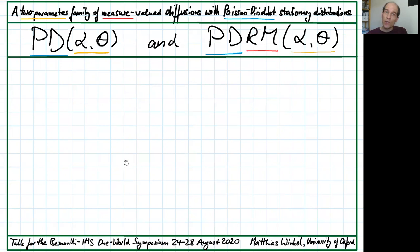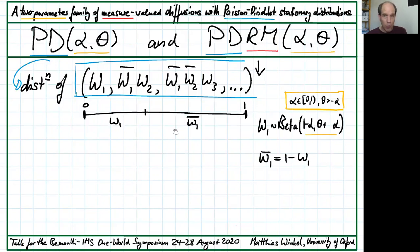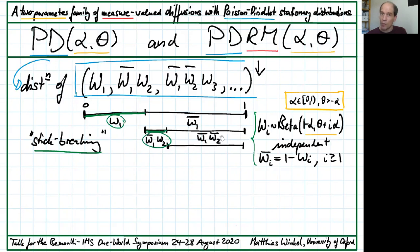So what does Poisson-Dirichlet mean in the measure-valued context? First, without measures, it's the distribution of a random decreasing sequence best described via stick-breaking. Imagine a stick of length 1. We split it into two parts, into beta proportions. We break off the first part and continue breaking the remainder independently into further beta proportions.